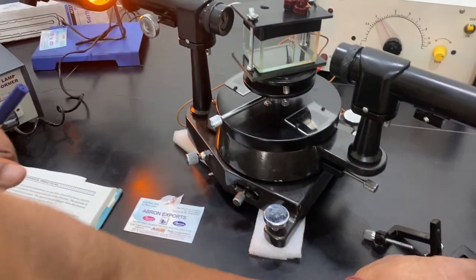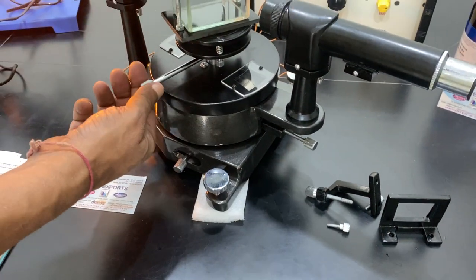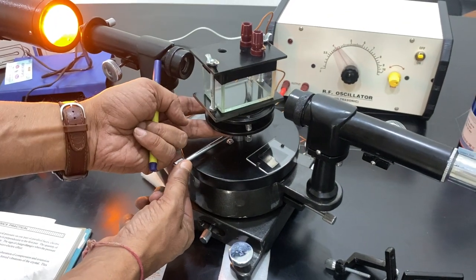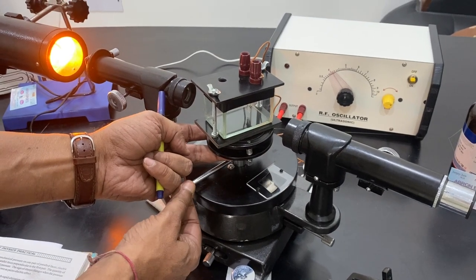This is the prism holder. The diffraction grating holder is not to be used in this. You can lift up or down as per requirement so that you can view the waves coming from the crystal.